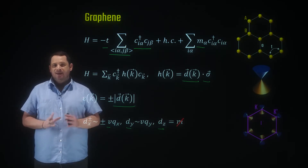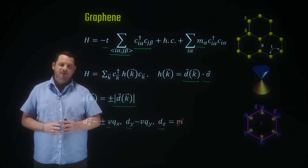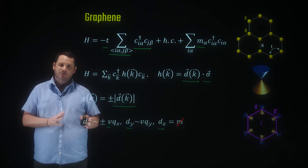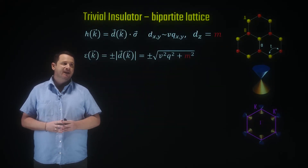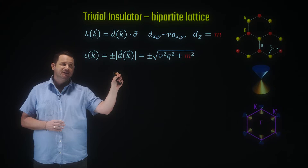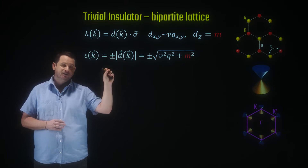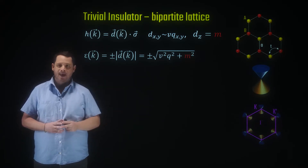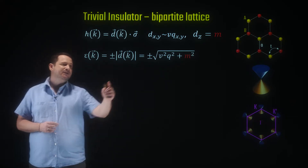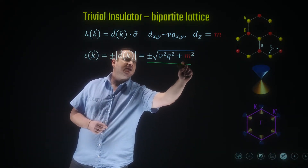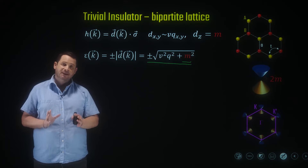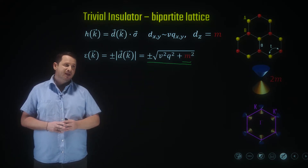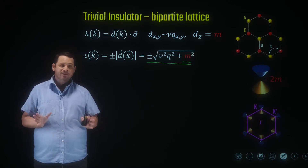What we're going to do next is consider two different types of insulators that can be derived from the graphene sheet. One would be a trivial insulator, and the second would be the topological insulator. We'll start from the trivial insulator, which we obtain by considering a bipartite lattice. In the bipartite lattice, we assign different masses on site A and site B — they are no longer equivalent, and the mass difference is equal to M. What we get as a result is a revised spectrum which has a mass term and is no longer a Dirac dispersion. This is a dispersion of an insulator with a gap of order 2M and parabolic dispersion above this gap.